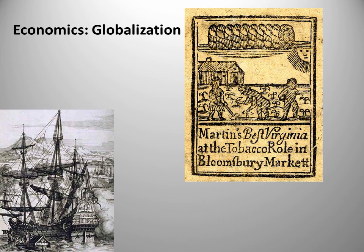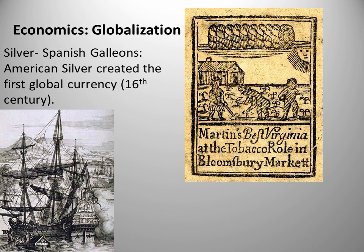The last item is economics and globalization. One image here shows a London advertisement for Martin's Tobacco Roll in the Bloomsbury Market — London advertising Virginia tobacco. The other image is of a Spanish galleon. It was these Spanish galleons that brought silver from mines like Potosi throughout the world and revolutionized the world economy — really the first time you can truly say we have a global economy. This period in the 1500s is often considered the beginning of globalization because of that South American silver and the Spanish galleons.